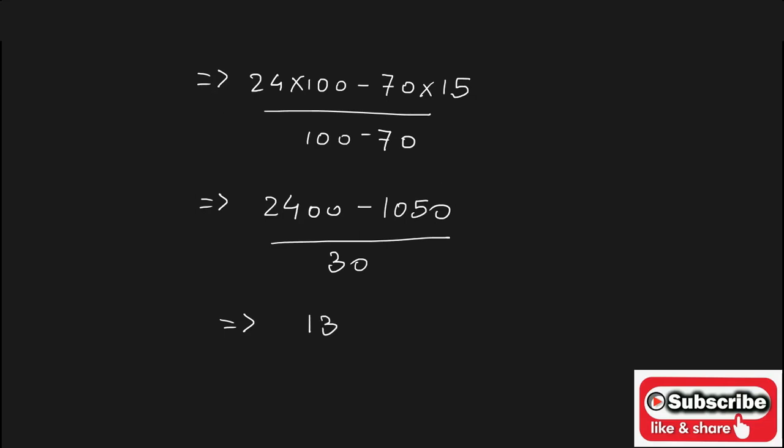You will be getting the answer as 24 into 100 minus 70 into 15 upon 100 minus 70. The answer will be 24 into 100 is 2400 minus 70 into 15 gives you 1050 upon 100 minus 70 is 30, and 2400 minus 1050 gives you the answer 1350 upon 30.